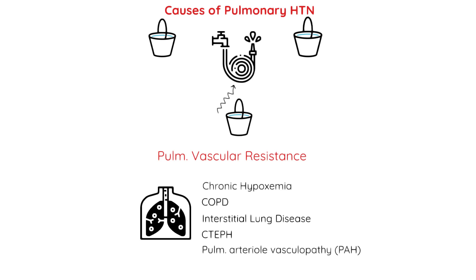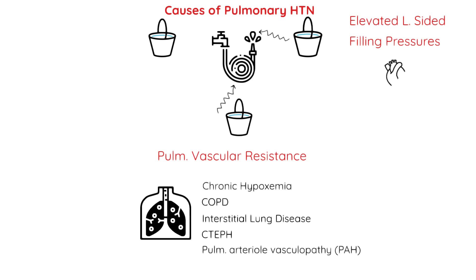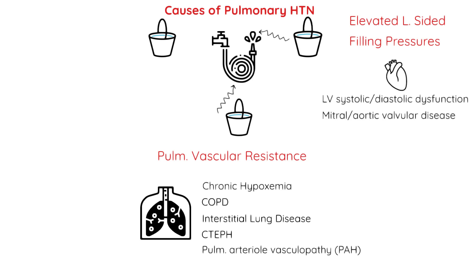In the second bucket, we have things that cause elevated left-sided filling pressures. This is like having a faulty nozzle at the end of the hose causing water to back up. In this bucket, left ventricular systolic or diastolic dysfunction, or mitral or aortic valvular disease, can cause backup and increase the pulmonary pressure.